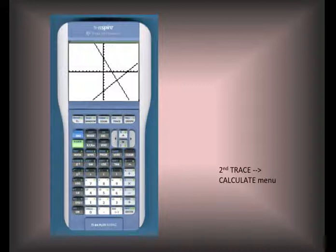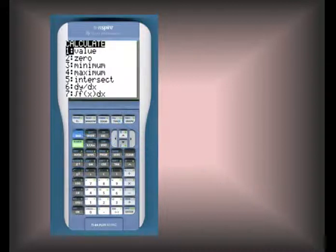Next, what we're going to do is let the calculator find the point of intersection for us. We should press the second key, which is the blue key, and the trace key in order to get the blue calculate menu. The blue calculate menu will look like this. We're interested in the intersect function, which is option 5.